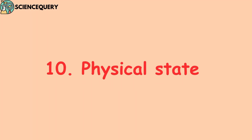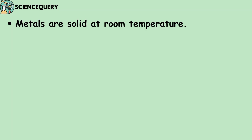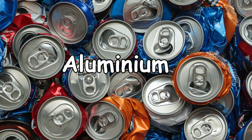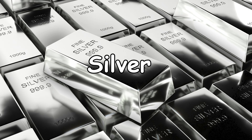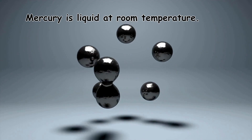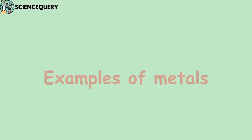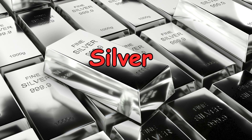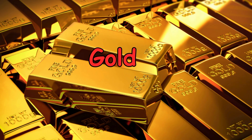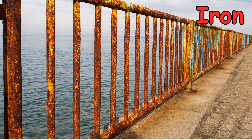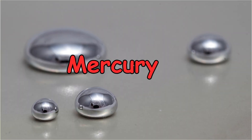The next important physical property is the physical state of metal. Metals are solid at room temperature — examples include iron, copper, aluminum, and silver. Mercury is the only metal that is liquid at room temperature. Some common examples of metals are silver, gold, copper, platinum, zinc, iron, aluminum, mercury, and lead.